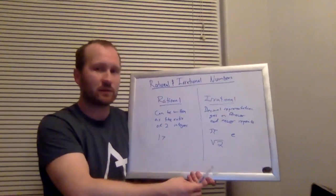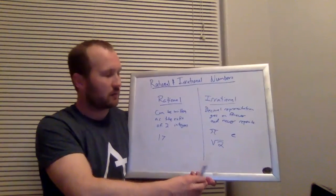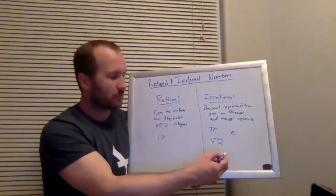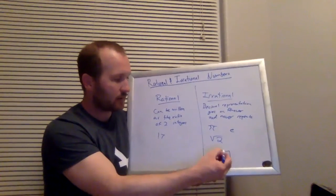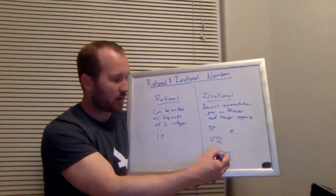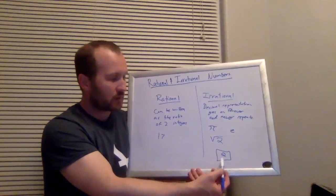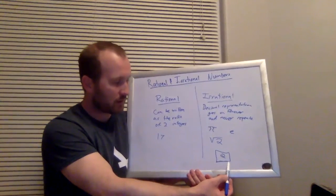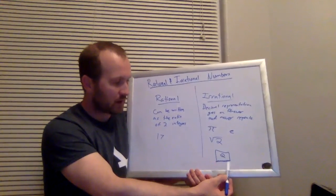When this was first discovered, it was very, very controversial. The square root of 2—all the square root of 2 is, is the length of one side of a square with area 2. If I drew a square that has a perfect area of 2, then the length of this side is an irrational number.